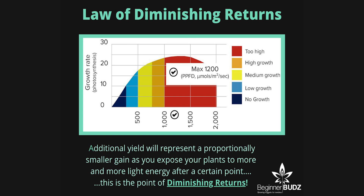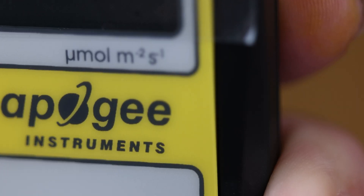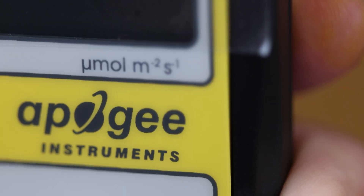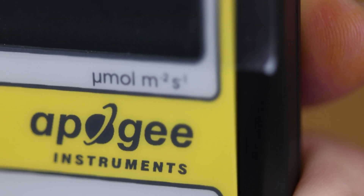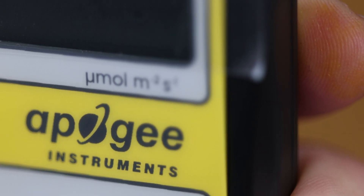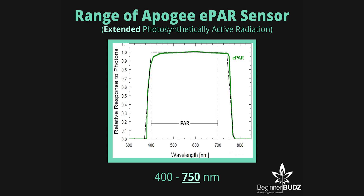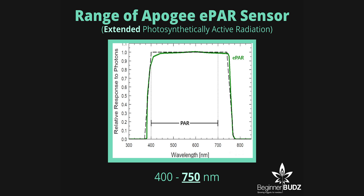Alright, so we got the why and the how. Next is what we need to measure our PPFD — this is where what most people call a PAR meter comes in. Ours is the new ePAR sensor made by Apogee Instruments. We know what PAR is, but ePAR? Abbreviated, it stands for Extended Photosynthetically Active Radiation. In short, it's a sensor that reads an extended range as opposed to your typical PAR meter.